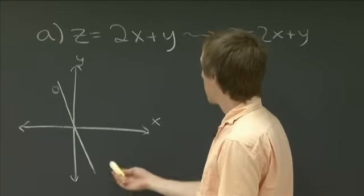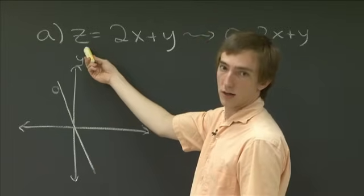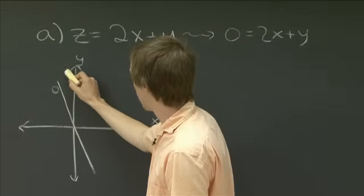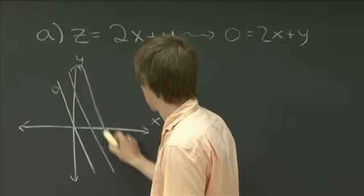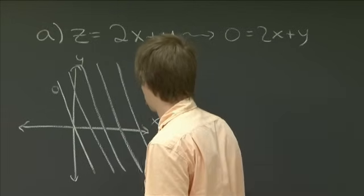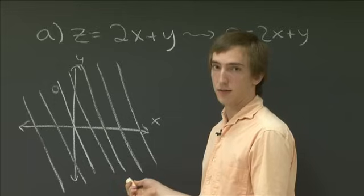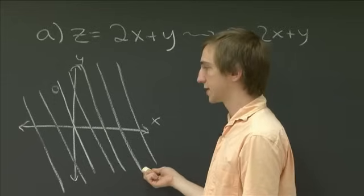Now, if you think about it, all the other level curves, we're just going to be varying the constant here. And so we're just going to be shifting this line. So all of our level curves, in this case, are just straight lines.